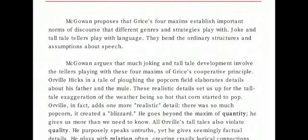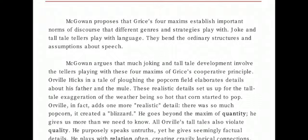McWan proposes that Grice's four maxims establish important norms of discourse that different genres and strategies play with — joke tellers and tale tellers play with language. According to McWan, the maxims given by Grice are very important in any discourse and are mostly used in different genres of literature as well as in strategies for telling tall tales and jokes.